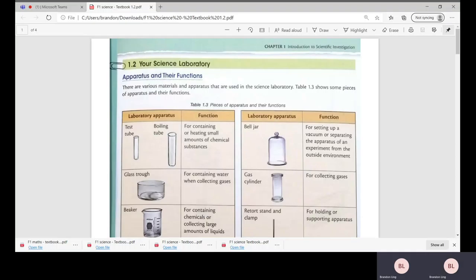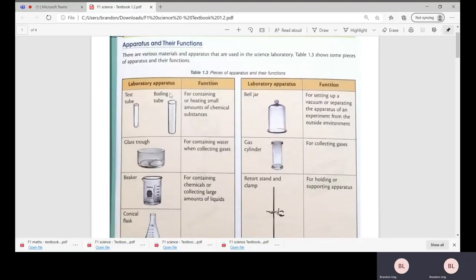On your left side you have the test tube and the boiling tube. Boiling tube is usually used for heating purposes, and test tube is used to hold certain chemical substances. Bell jar is for setting up a vacuum or separating the apparatus of an experiment from the outside environment.